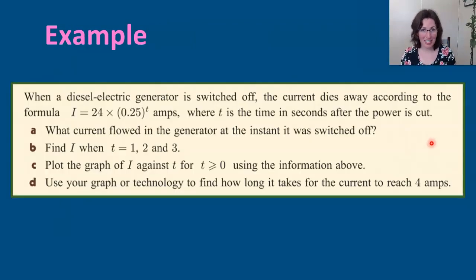The one example we're going to work through here: When a diesel electric generator is switched off, the current dies away according to the formula I = 24 × 0.25^t amps, where t is the time in seconds after the power is cut. So here are the questions that we're going to answer.